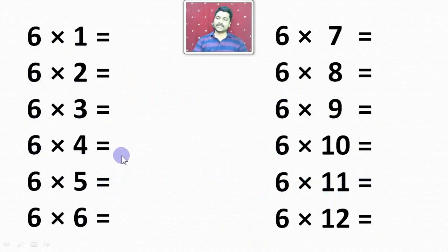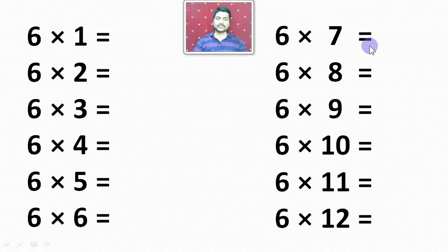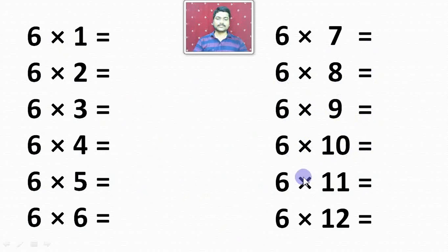6 4's are 24. 6 5's are 30. 6 6's are 36. 6 7's are 42. 6 8's are 48. 6 9's are 54. 6 10's are 60. 6 11's are 66. 6 12's are 72.